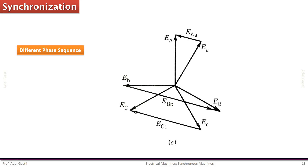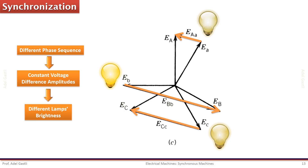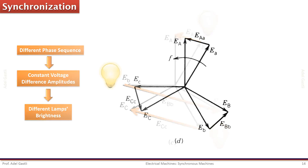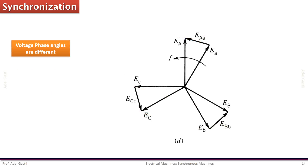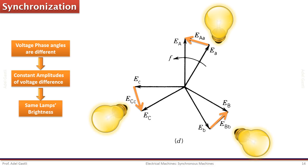If the phase sequences are not the same but voltages and frequencies are the same, the amplitudes of the voltage difference between generator and grid will be constant but different from one phase to another — so the lamps will have different brightness. Finally, if the phase is not the same but voltage, frequency, and phase sequence are the same, there will be identical constant three-phase voltage differences, which lead to the same lamp brightness.